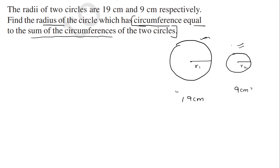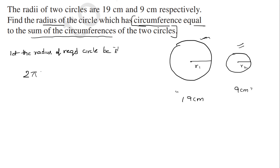That circle's circumference is equal to the sum of these two circumferences. We don't know the radius of that circle, so let the radius of the required circle be capital R. From the given statement, we can write that 2πR is equal to 2πR1 plus 2πR2.